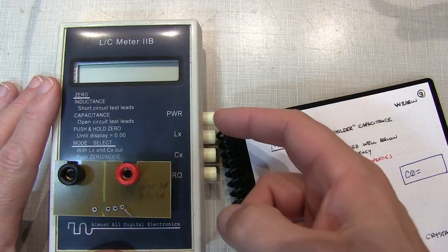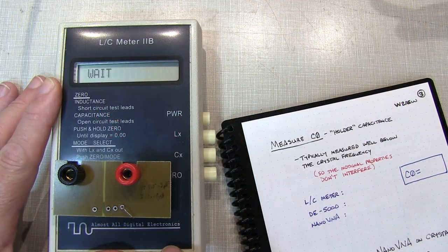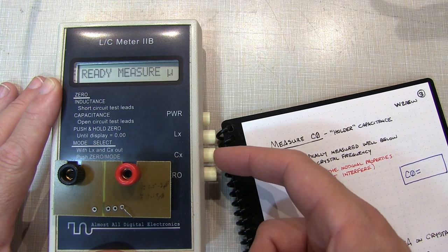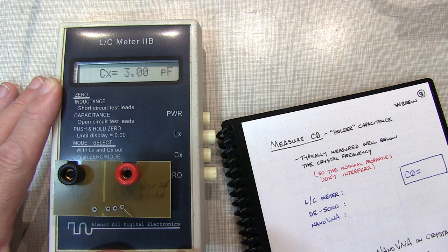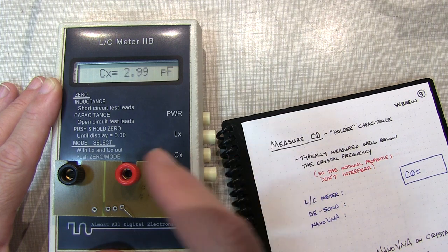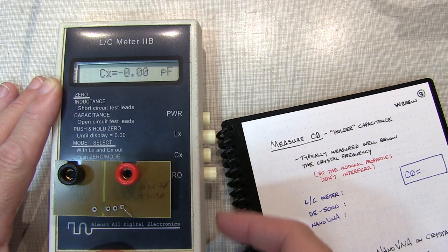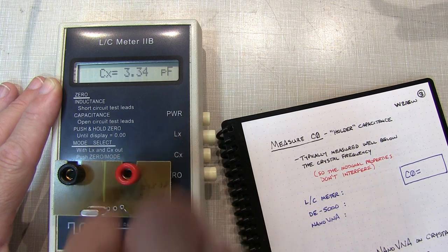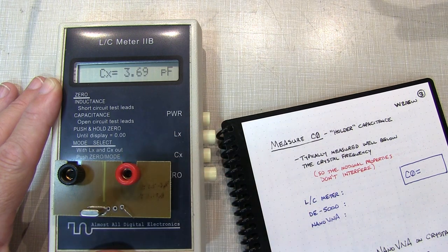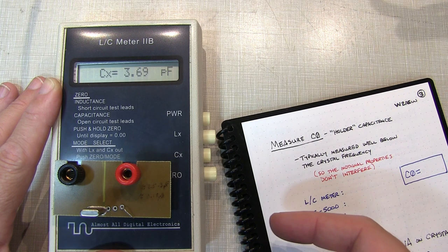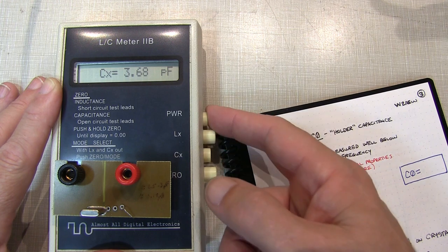Starting with my AADE LC meter — turn it on, let it do its quick calibration. I've got a fixture that makes it easy to plug in my crystal, so I'll zero out the capacitance of the fixture first. Sticking the crystal in, we're looking at 3.69 to 3.70 picofarads. It looks like it's spending more time on 3.69, so that's what we'll call it.